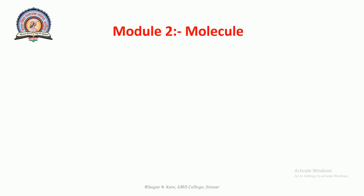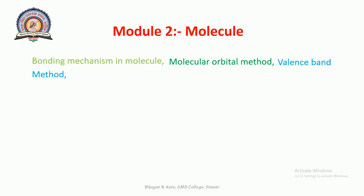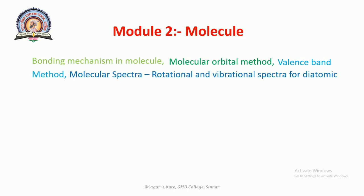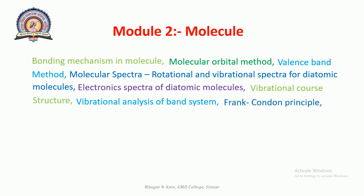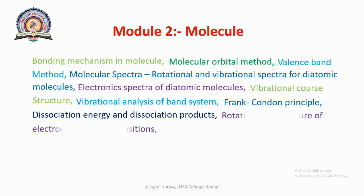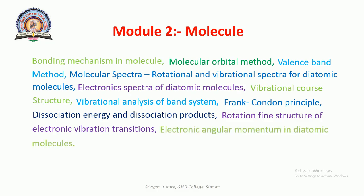In the second module, Molecules, the topics are: Binding Mechanism in Molecules, Molecular Orbital Method, Valence Bond Method, Molecular Spectra — that is Rotational and Vibrational Spectra for Diatomic Molecules — Electronic Spectra of Diatomic Molecules, Vibrational Coarse Structure, Vibrational Analysis of Band Systems, Franck-Condon Principle, Dissociation Energy and Dissociation Products, and Rotational Fine Structure of Electronic-Vibrational Transitions.